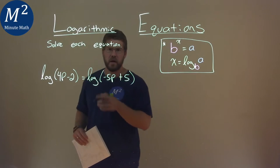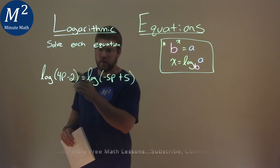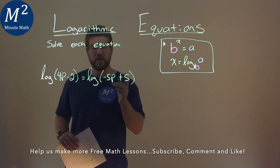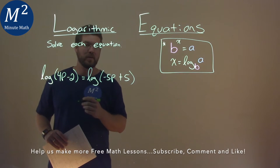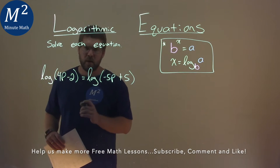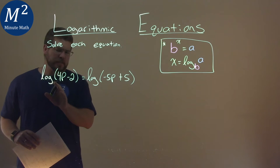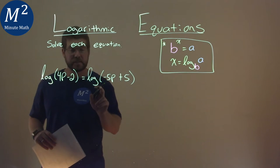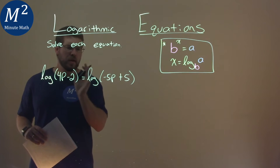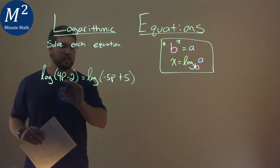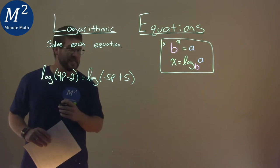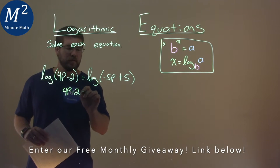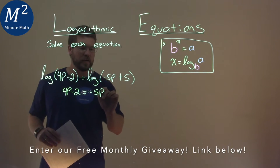We're given this problem: log of 4p minus 2 is equal to log of negative 5p plus 5, and we need to solve this equation. I see log here and log here — they both have the same base of 10. When that happens, we can take the inside part of each one and set it equal to each other. So we have 4p minus 2 is equal to negative 5p plus 5.